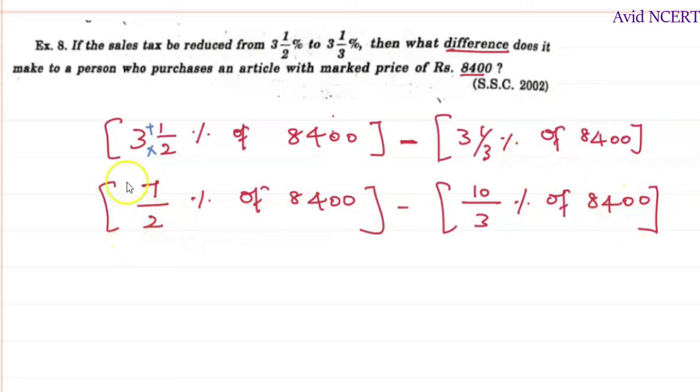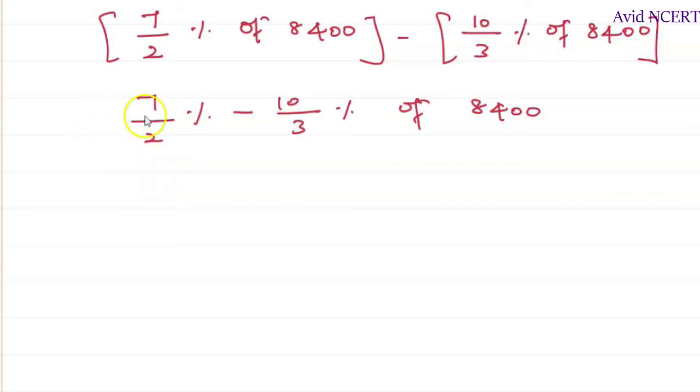So we can subtract both this percentage values which is 7/2 percent of 8400. So for those who don't know how to subtract this, this is how we'll do it.